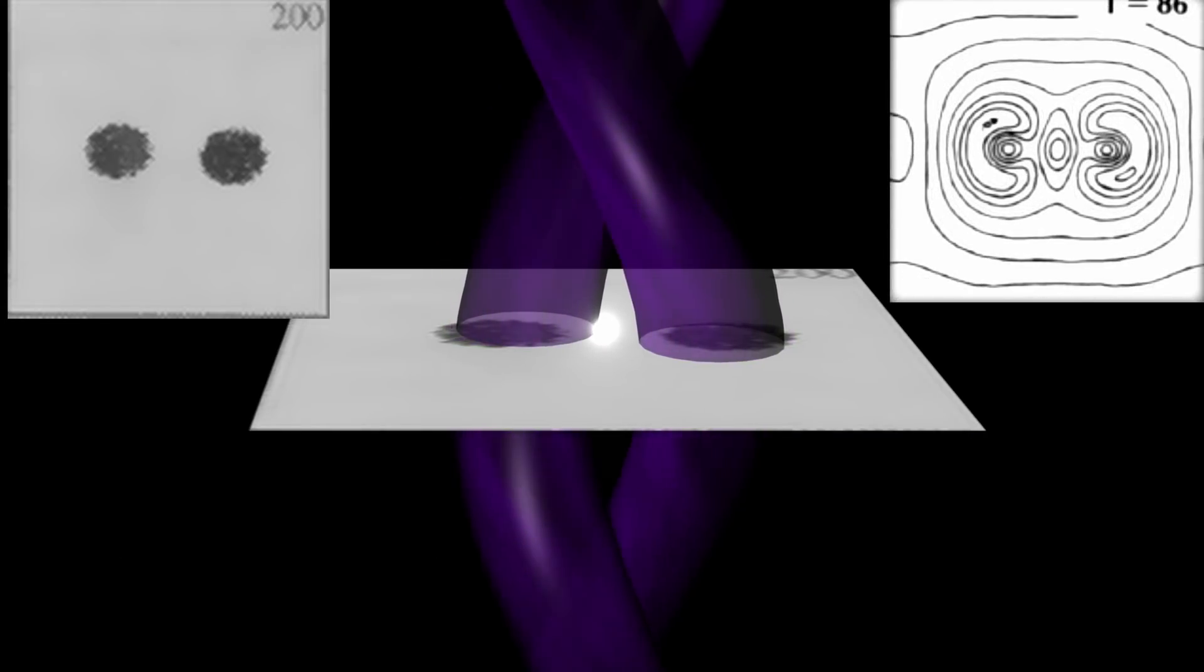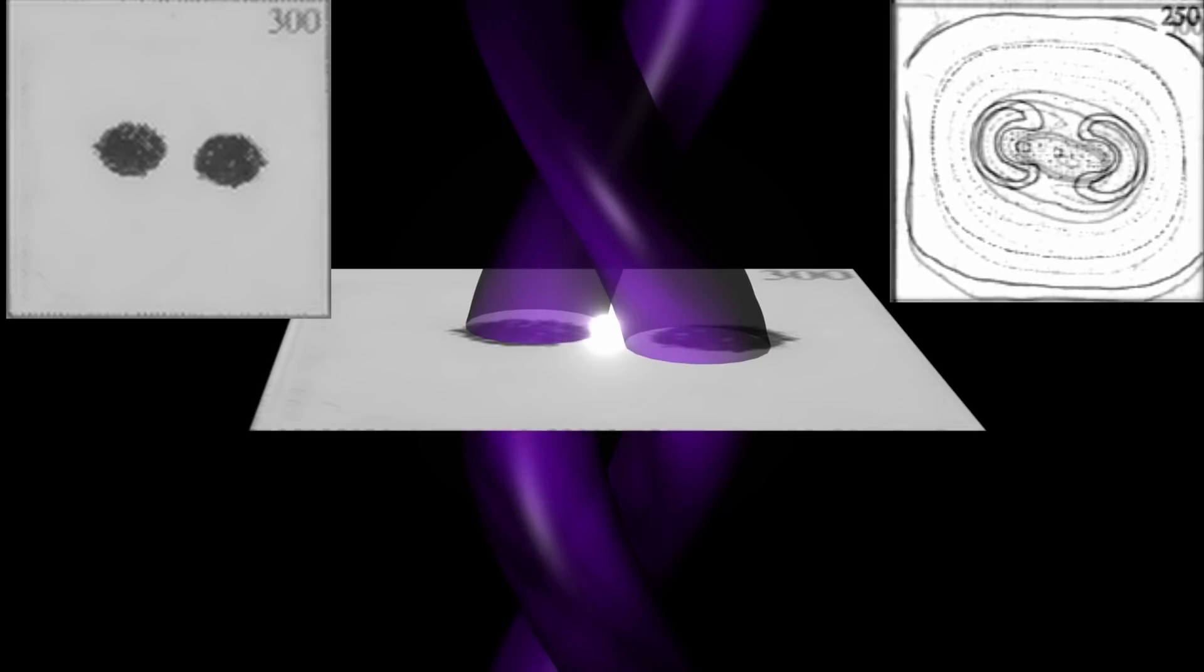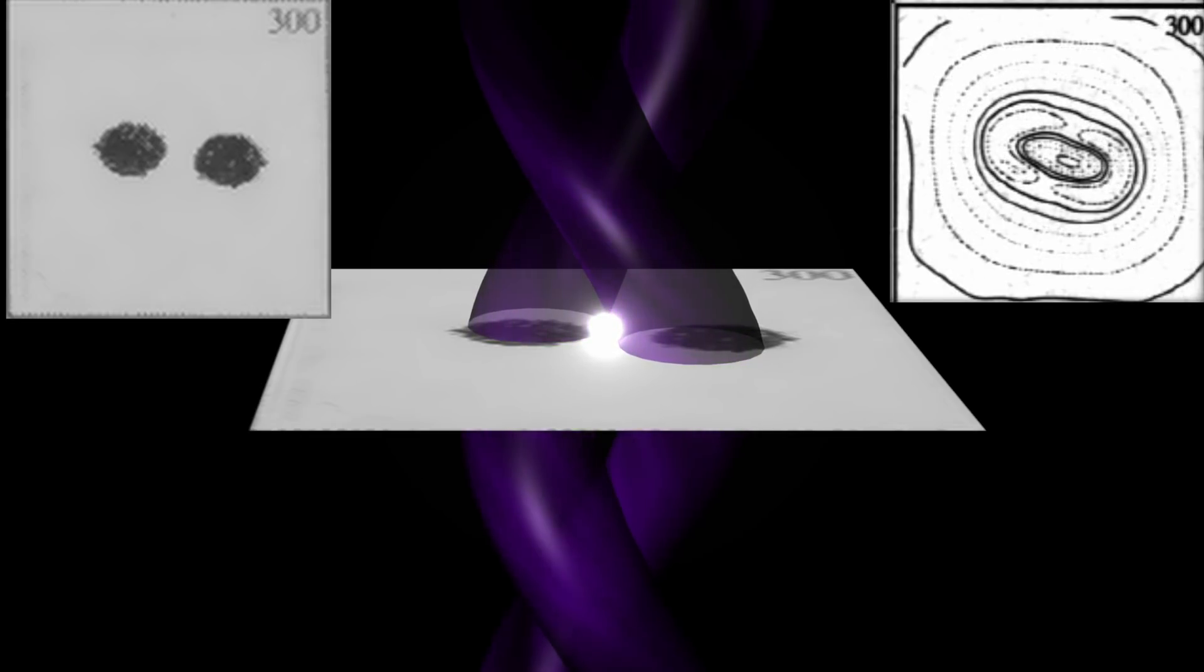As the two filaments continue to twist around each other their motion creates the spiral arms of the galaxies and the central bulge is where the matter is compressed the most.